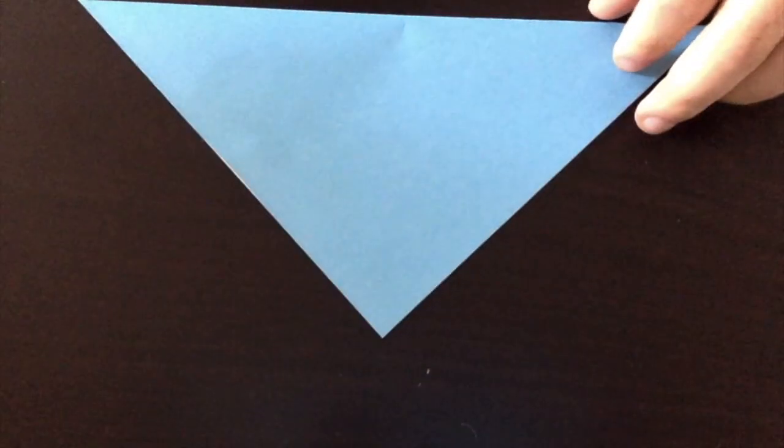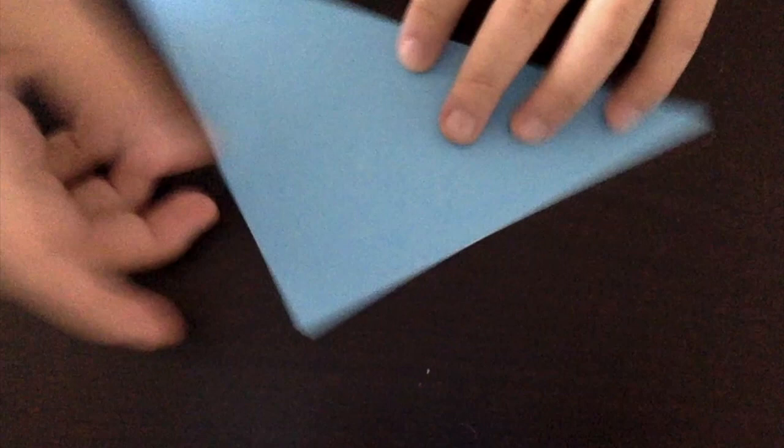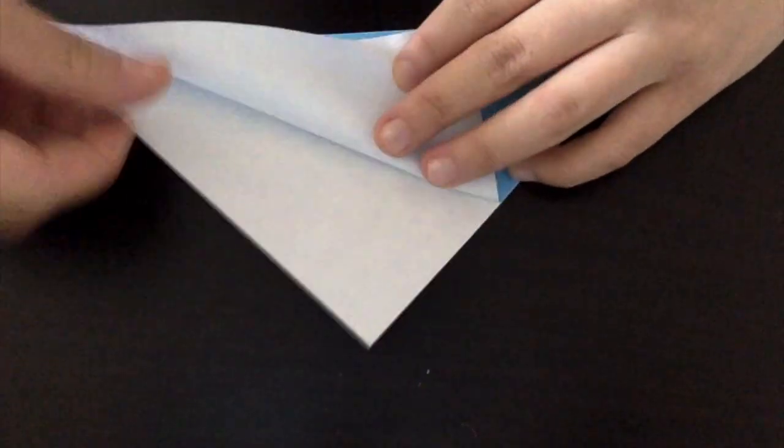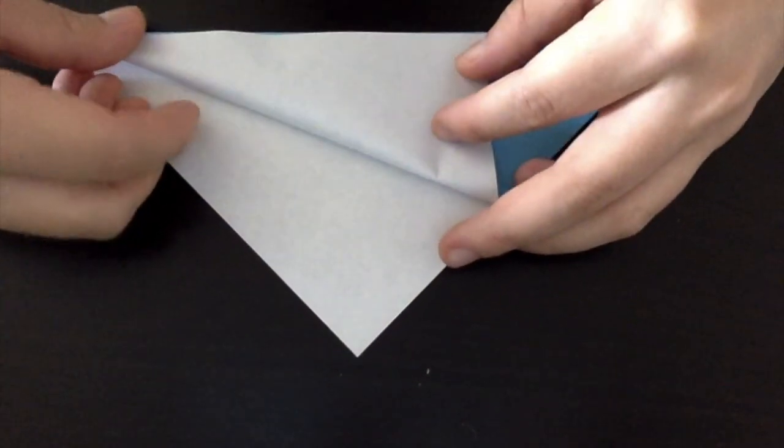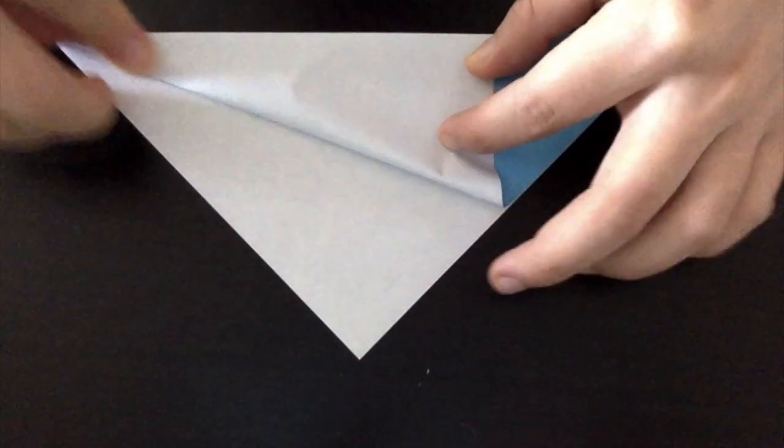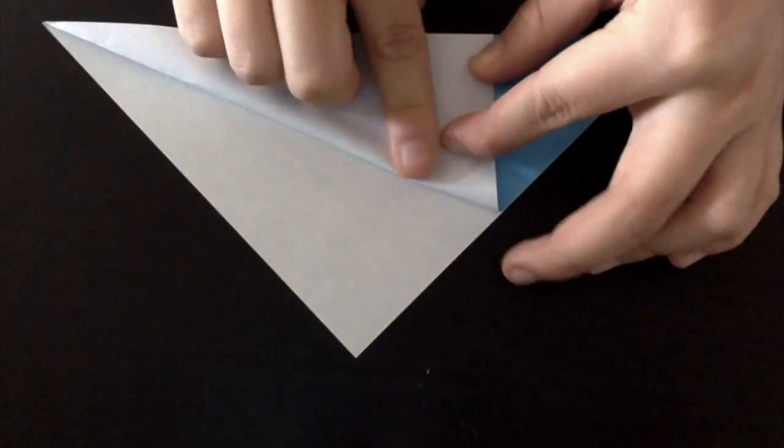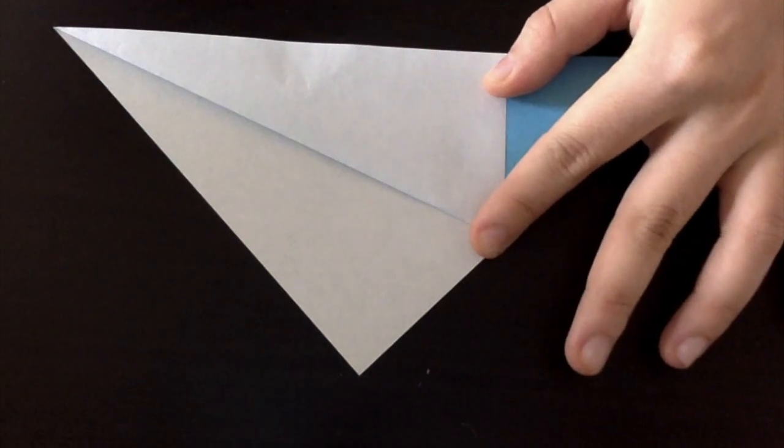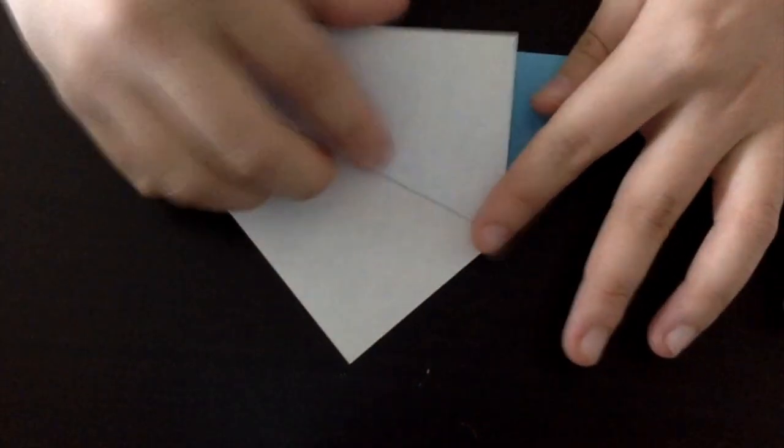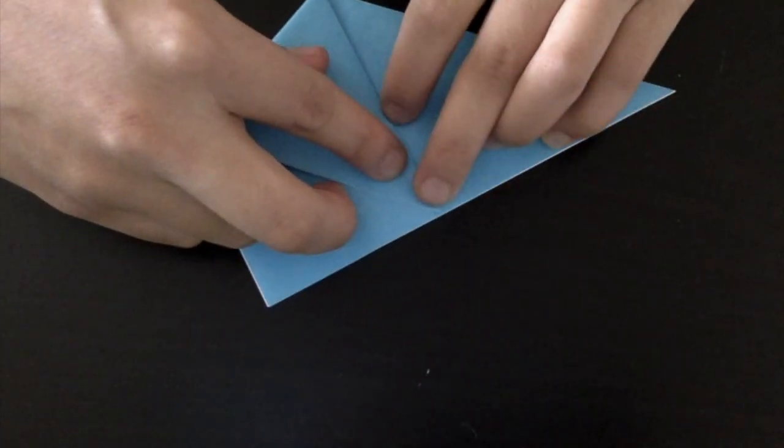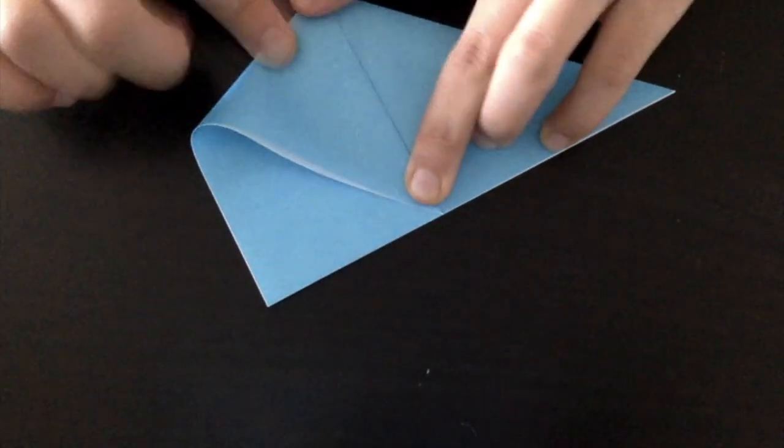The next step is to fold the top point of the triangle down to the bottom line, but only the top layer. Then you're going to unfold this and fold the bottom right corner to meet that new point that you just created, forming a small triangle.